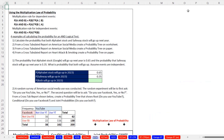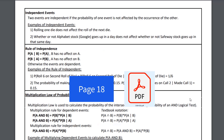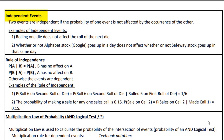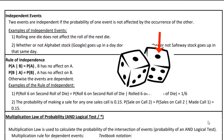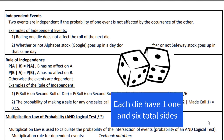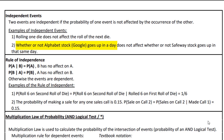Over in the PDF notes on page 18, we want to define independent events. Two events are independent if the probability of one event is not affected by the occurrence of the other. For example, rolling one die does not affect the roll of the next die. If I roll a one on the first die, it has no effect on what happens on the second die — there's still one side with a one and six total sides for both dice. Whether or not Alphabet stock goes up in a day or year doesn't affect whether or not Safeway stock goes up in that same period.